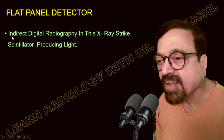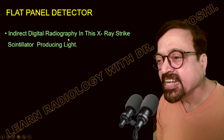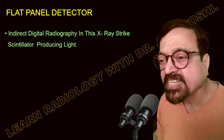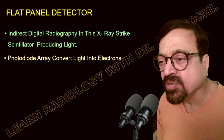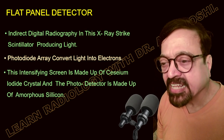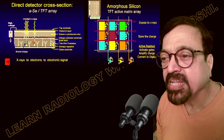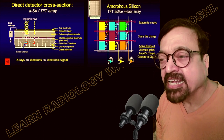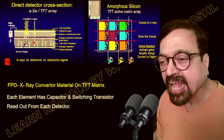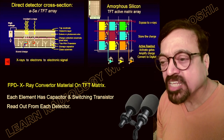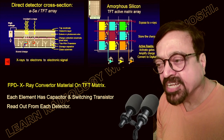Flat panel detectors use indirect digital radiography: x-rays strike a scintillator, producing light; a photodiode array then converts that light into electrons. The scintillator screen is made of cesium iodide crystals and the photo detector is made of amorphous silicon. A diagram is shown here — please pause to review it in more detail. The FPD x-ray converter material sits on a TFT matrix where each element has a capacitor and switching transistors for read-out from each detector.